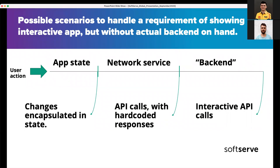That is also a valid solution, and I've done it many times. We can try to mimic a fully qualified backend to have interactive API calls. By interactive, I mean that on a POST request you will see that some entity is added to your backend database — except it's not a real database, of course. You can fetch this entity back, and from an outer perspective, this will work exactly as a real application.